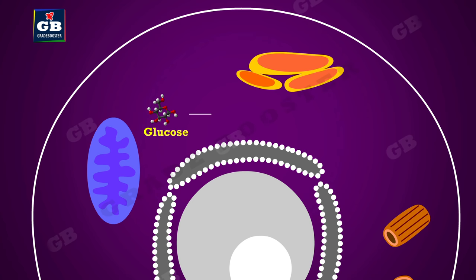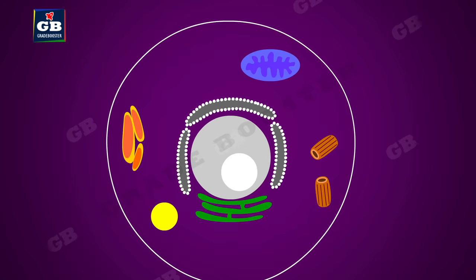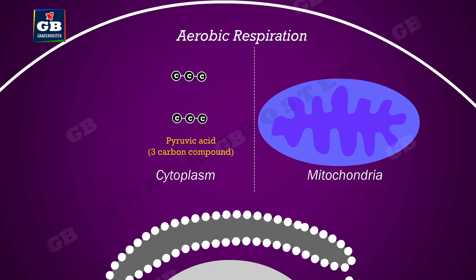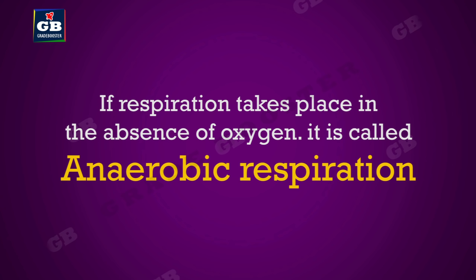Respiration helps in the release of energy from glucose. Some organisms need oxygen for this — that is called aerobic respiration. In aerobic respiration, one glucose molecule with six carbons splits into two molecules of pyruvate, each containing three carbons; this happens in the cytoplasm. These pyruvic acid molecules enter the mitochondria and are converted to carbon dioxide and water, releasing energy in the form of ATP. ATP fuels the different endothermic reactions that take place inside the cells.